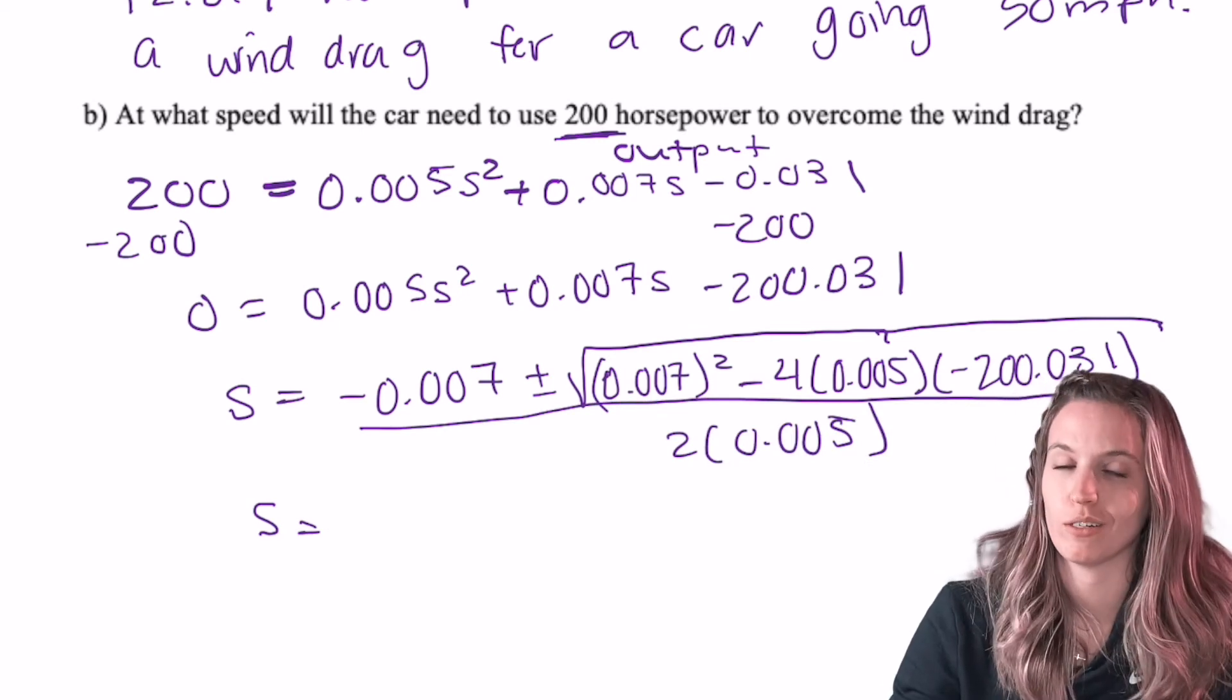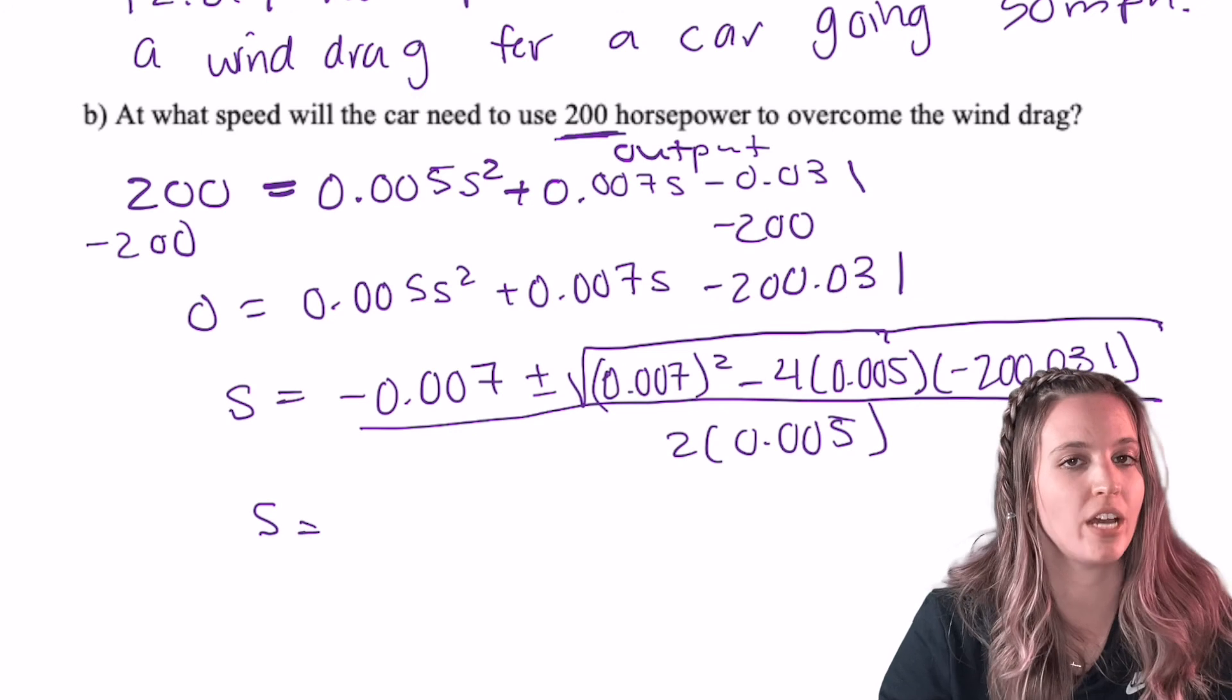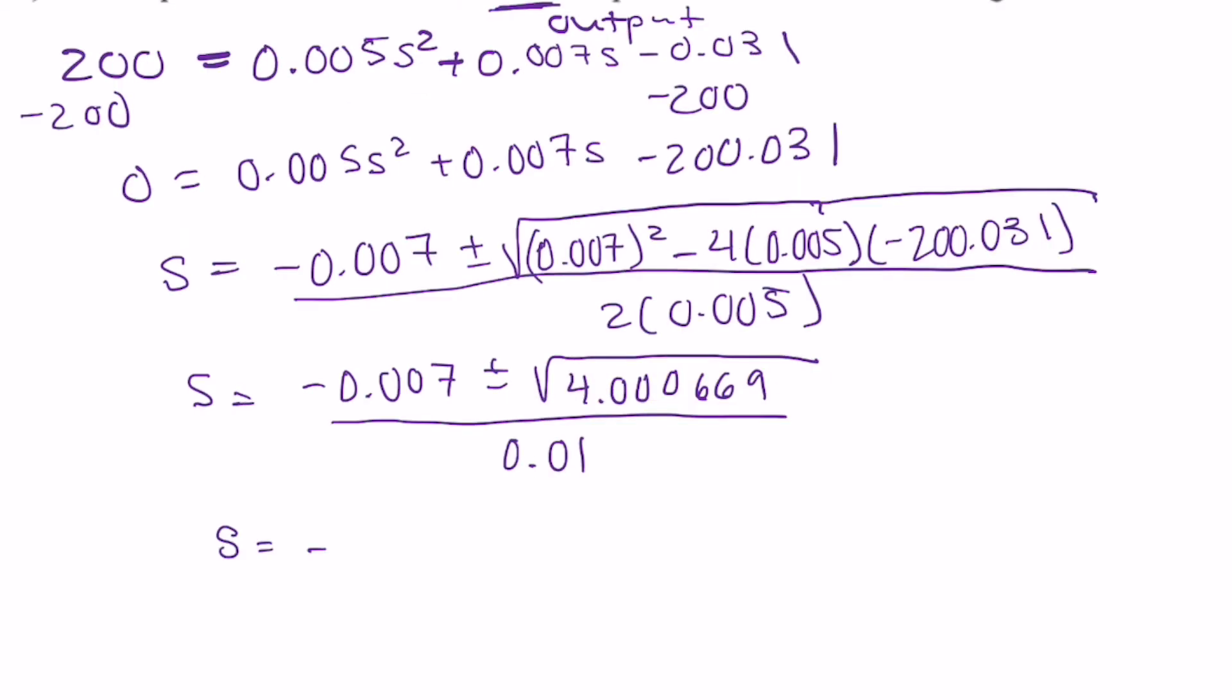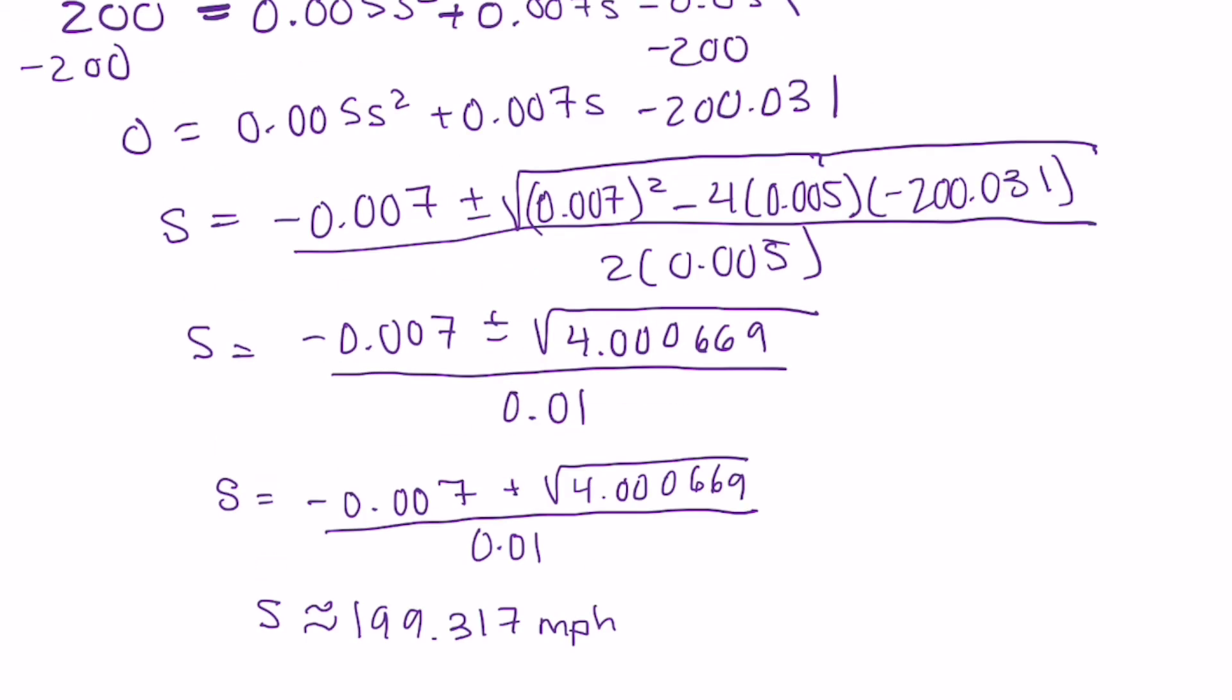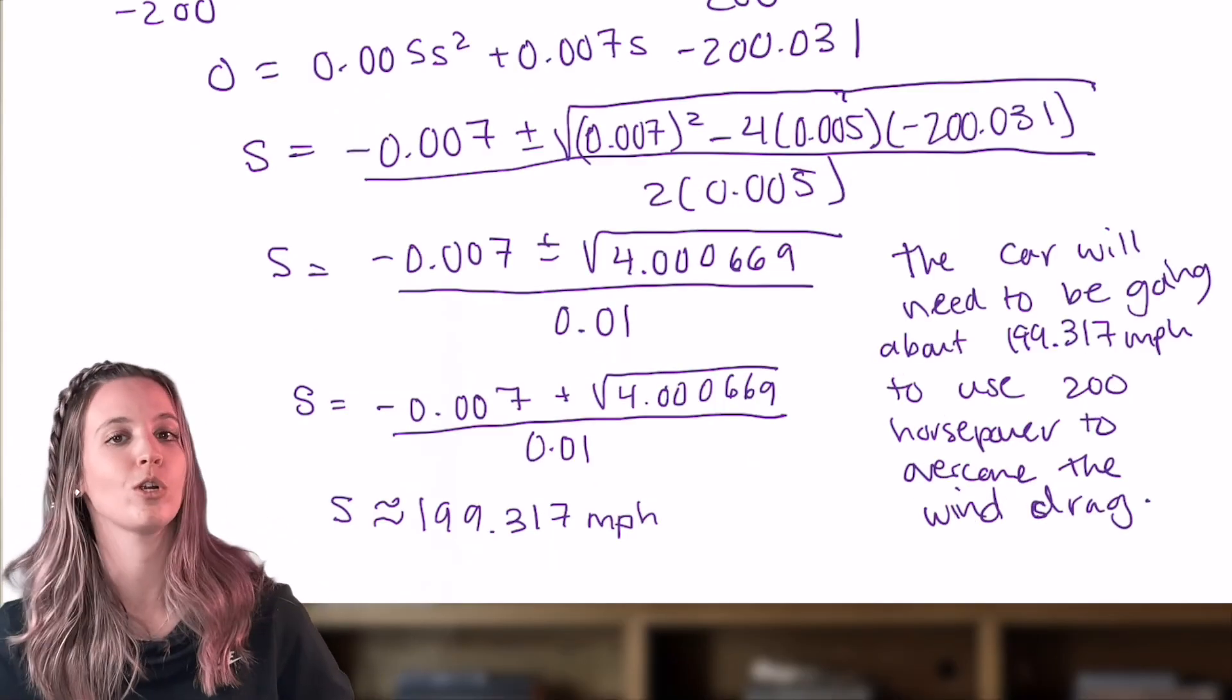Looks like it doesn't factor, which is not a surprise. So I'm using the quadratic formula now. Be really careful as you type in these values. So it looks like the car will need to be going about 199 miles per hour to use 200 horsepower to overcome the wind drag.